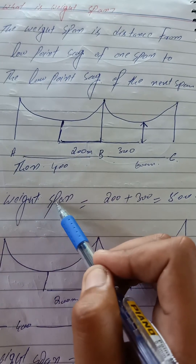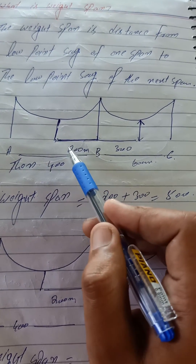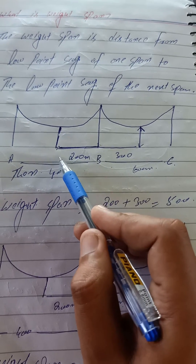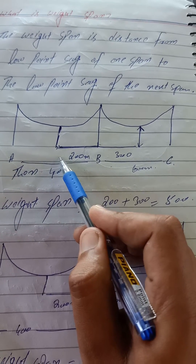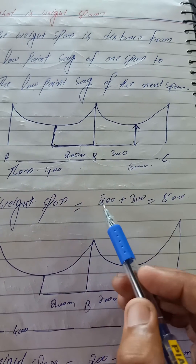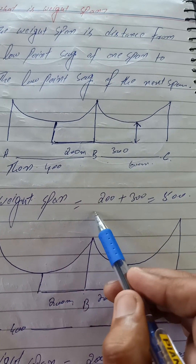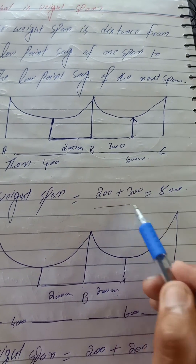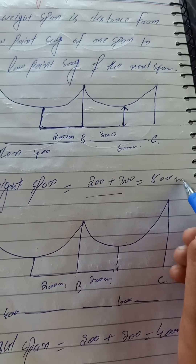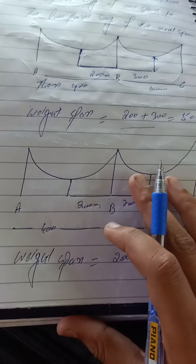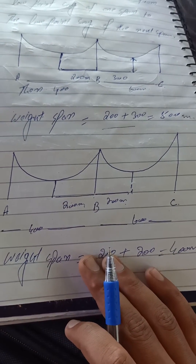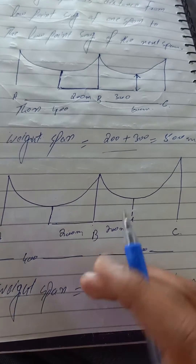In this case, the weight span will be equal to the sum of the lowest point of one span and the lowest point of the next span. So the weight span in this case will be equal to 400 meters. Note that it is not necessary that the lowest point of the sag will be at the midpoint of the span.